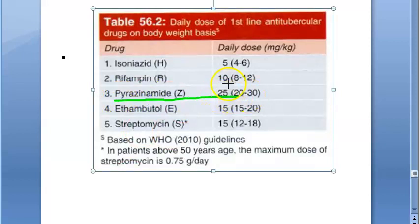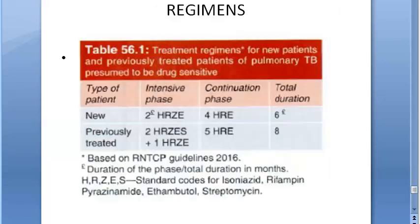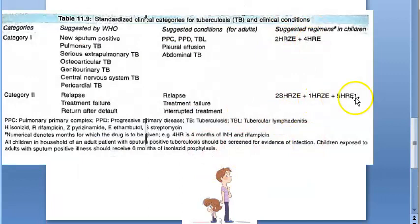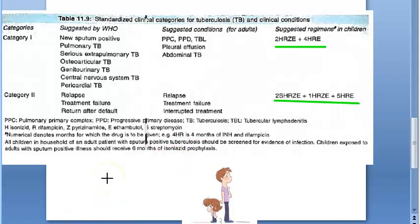Pyrazinamide — the name is long, the dose is also long — 25 mg/kg. Isoniazid: just remember 5 mg/kg. Remember at least these two extremes. The treatment regimen does not look very different from adults; the main difference is that doses are weight-based in children.